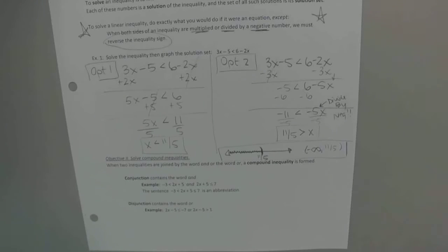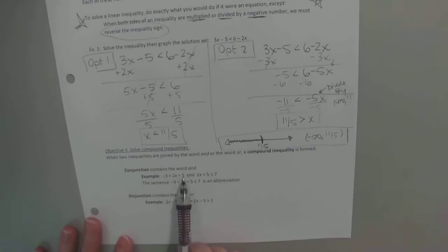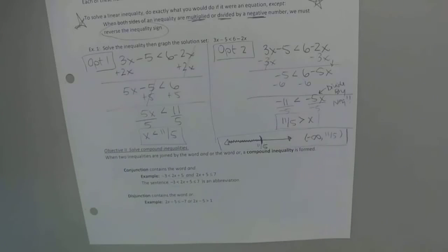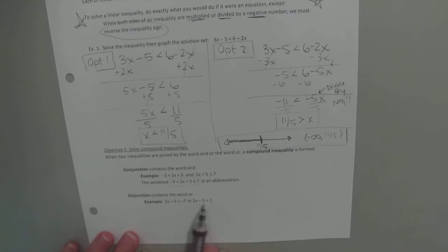So then the next thing is we can actually have compound inequalities, meaning you have more than one inequality happening. You can have the word 'and,' which means you have it shoved in the middle and you have two bounds on the left and right. Or you can have the word 'or,' which means this or that happened — they're just two inequalities that you solve separately. Here's an example of 'and': if negative three is less than 2x plus five and 2x plus five is less than or equal to seven, you can combine them to make this compound inequality. A disjunction is with the word 'or' — you can't combine them, so you just leave them as two separate inequalities and solve them as two separate inequalities.